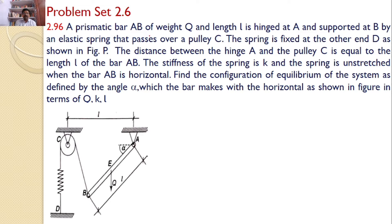A prismatic bar AB of weight Q and length L is hinged at A and supported at B by an elastic spring that passes over a pulley C. The spring is fixed at the other end D as shown in the figure. The distance between the hinge A and the pulley C is equal to the length L of the bar AB. The stiffness of the spring is K, and the spring is unstretched when the bar AB is horizontal. Find the configuration of equilibrium defined by angle alpha in terms of Q, K, and L.